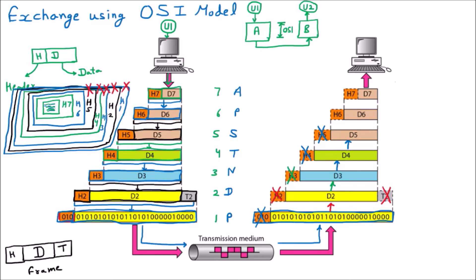One more envelope is removed, then H6 - the header of the presentation layer - is discarded. Then the application layer header H7 is also discarded. Once all these layers are removed, we are left with only the original data that was sent, which is now received by you.